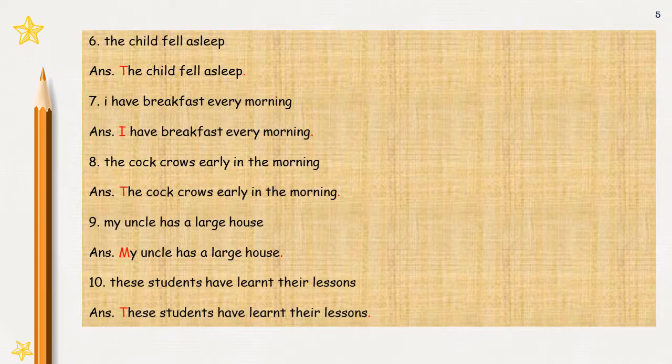Sixth is: the child fell asleep. The child fell asleep. The T you will write in capital, rest of the letters in small, and then at the end of the sentence, put a full stop — T capital, full stop. Seventh: I have breakfast every morning. I will be written in capital, and after morning, put a full stop. Eighth: the cock crows early in the morning. T capital — cock crows early in the morning — full stop.